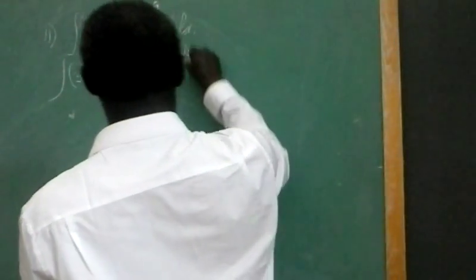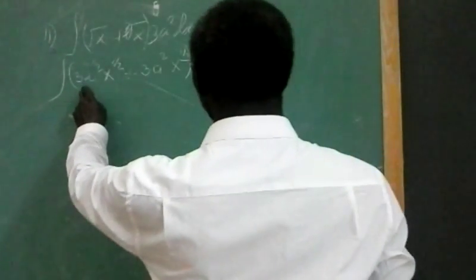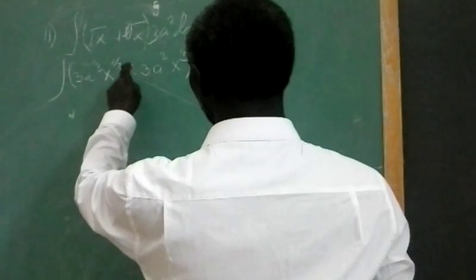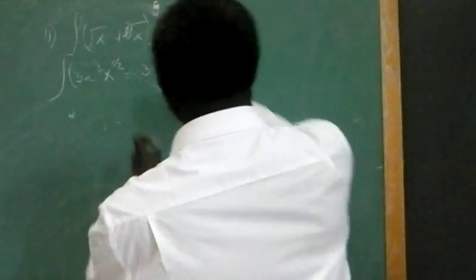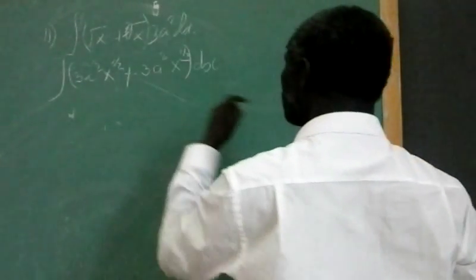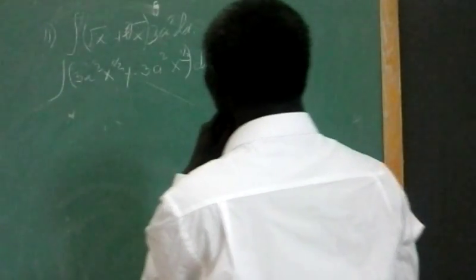So, we have to write the problem by removing the bracket. We get to equal now to 3a squared x, plus 3a squared x to the one-third, dx.